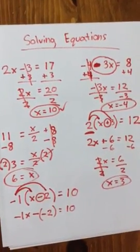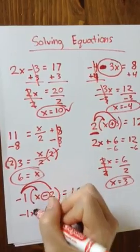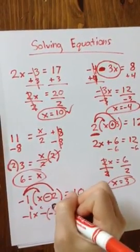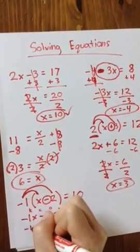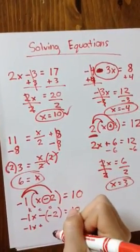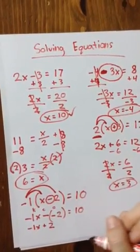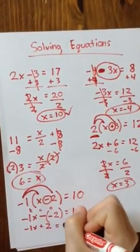Remember what we did earlier with adding and subtracting positive and negative numbers? This looks very confusing. If I do keep change opposite, this will become negative 1x. I'm going to change that to addition and change that to a positive 2. Now I have negative 1x plus 2 equals 10.